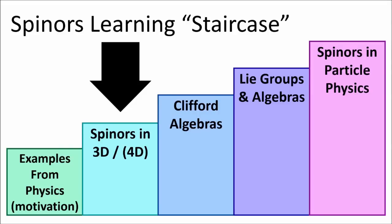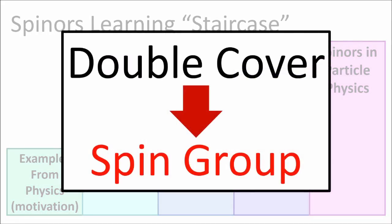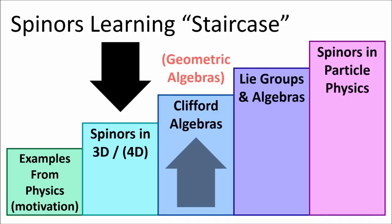This is our last video talking about the basics of spinors in 3D space and 4D spacetime from a mathematical point of view. We're going to talk about a deep concept we've been approaching for a while, called the double cover, which leads to the notion of a spin group. This will set the stage for the next set of videos in the series where we discuss Clifford Algebras, also called Geometric Algebras.